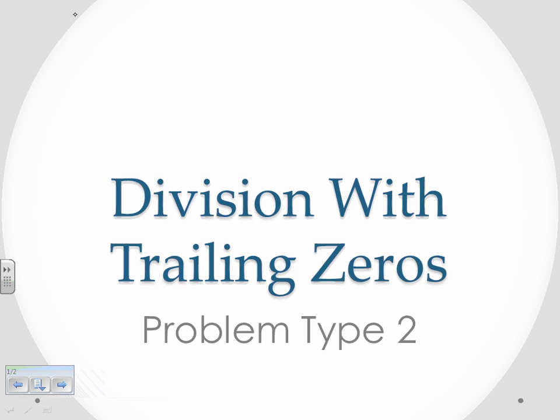In this video, we'll be taking a look at the problem set for division with trailing zeros, problem type number two, so a little bit different if you just watched problem type number one.